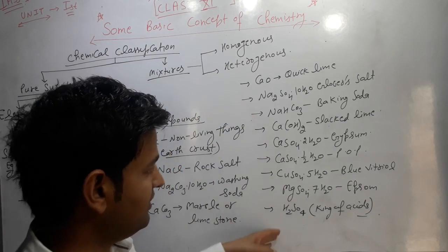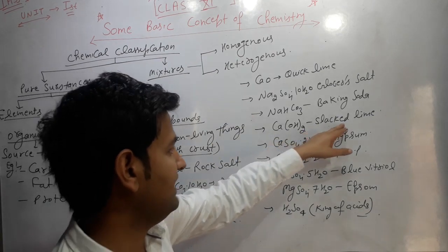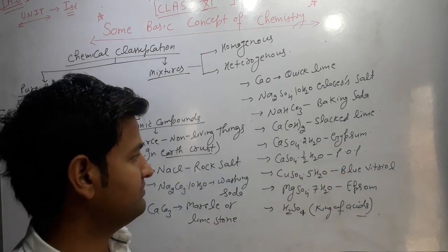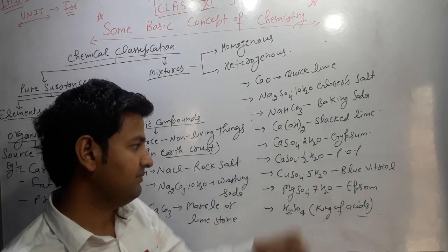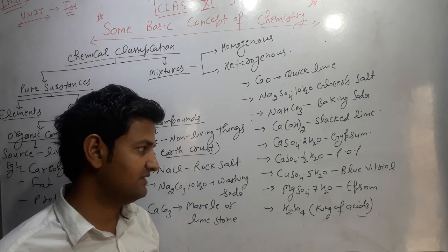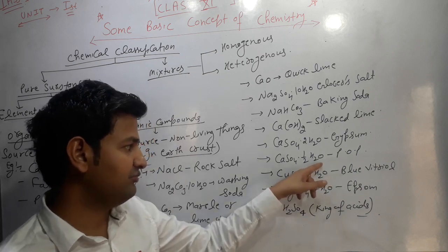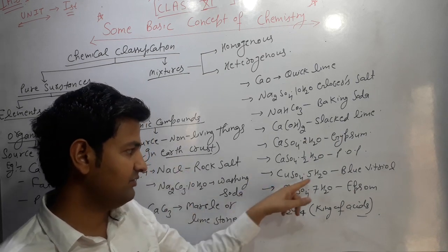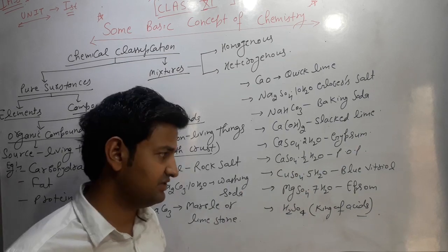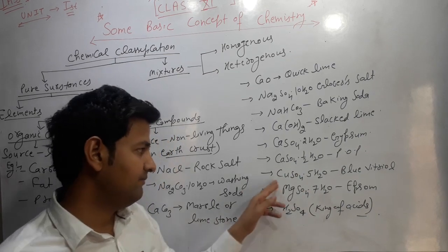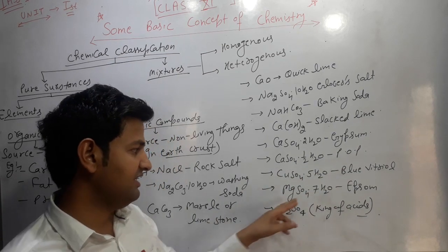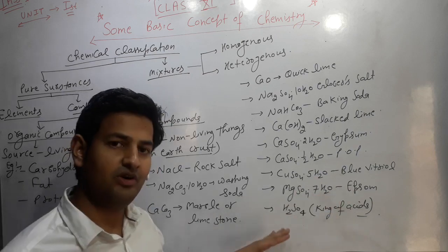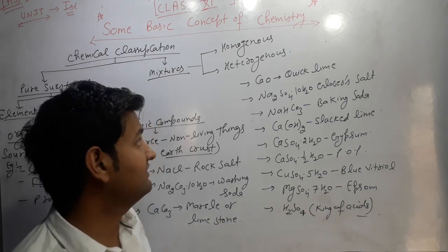You have to remember all these. Ca(OH)₂ is slaked lime; CaSO₄·2H₂O is gypsum; CaSO₄·½H₂O is plaster of Paris — plaster of Paris absorbs moisture and is converted into gypsum. CuSO₄·5H₂O forms blue colour crystals called blue vitriol. MgSO₄·7H₂O is Epsom salt. And H₂SO₄ is called the king of acids.